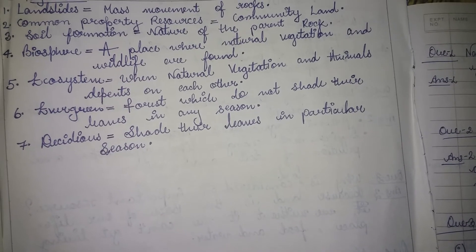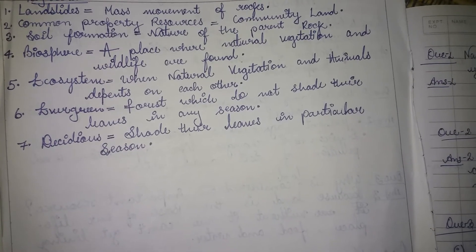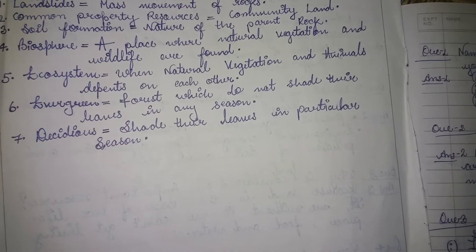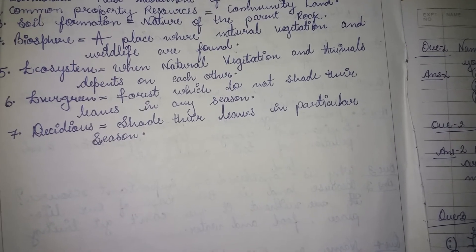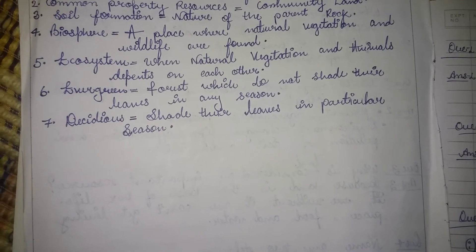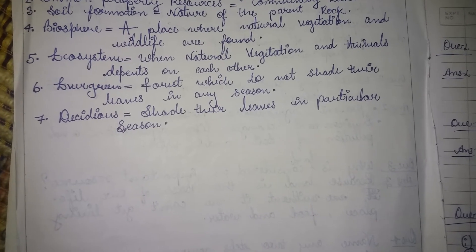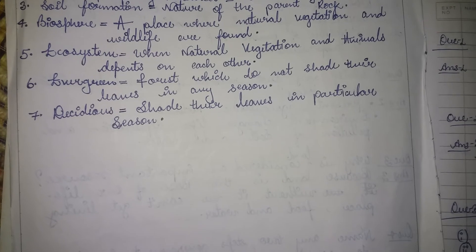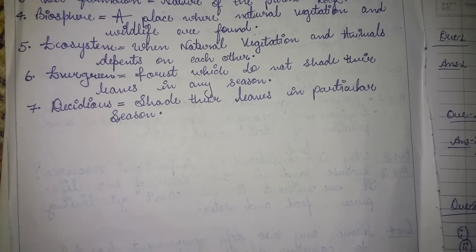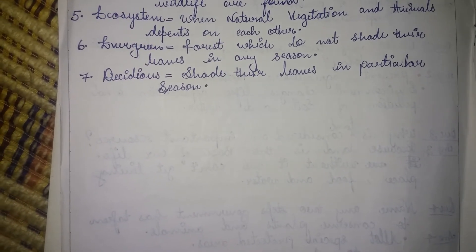Third keyword: soil formation — nature of the parent rock. Fourth keyword: biosphere — a place where natural vegetation and wildlife are found. Fifth keyword: ecosystem — when natural vegetation and animals depend on each other. Sixth keyword: evergreen forest — forests which do not shed their leaves in any season. Seventh keyword: deciduous forest — forests that shed their leaves in a particular season.